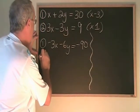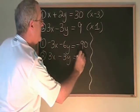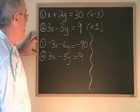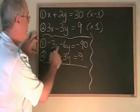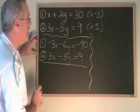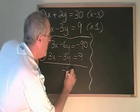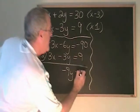The second equation stays the same, 3x minus 3y equals 9. Now when I do my elimination through addition with these two equations, 3x plus negative 3x cancels. Negative 6y plus negative 3y is negative 9y, and negative 90 plus 9 is negative 81.